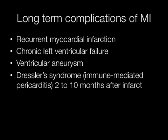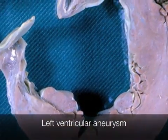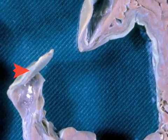Long term complications of myocardial infarction include recurrent myocardial infarction, chronic left ventricular failure, ventricular aneurysm, and rarely Dressler's syndrome — an immune-mediated pericarditis that occurs 2 to 10 months after the infarct. This is an example of a ventricular aneurysm, a long term complication of myocardial infarction.